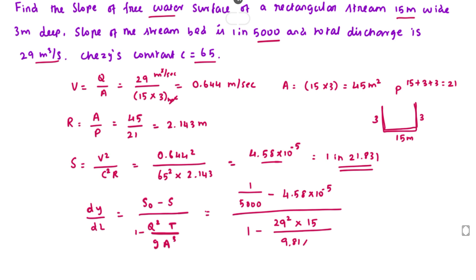Solving this we get 1.56 × 10⁻⁴. This is the backwater curve, which we can express as 1 in 6400.